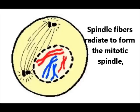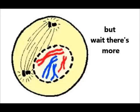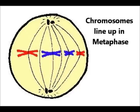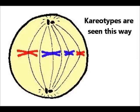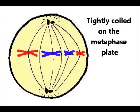Spindle fibers radiate to form the mitotic spindle, but wait there's more. Chromosomes line up in metaphase, they line up in metaphase. Karyotypes are seen this way, tightly coiled on the metaphase plate.